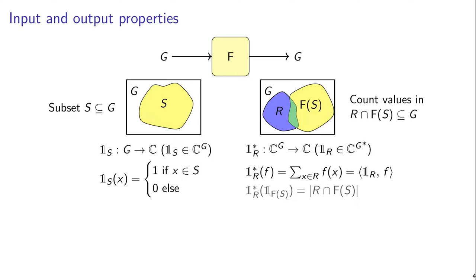So what is the output property then? Well, we have a set R, so we could say that's also just the indicator function of R. But that's not really what we want, because what we actually want is to count how many values are in R. So that means that if we think of the output as being itself an indicator function of some set, we want to count how many elements of that set are also in R. So actually we need a function from C superscript G to the complex numbers — this maps functions to complex numbers.